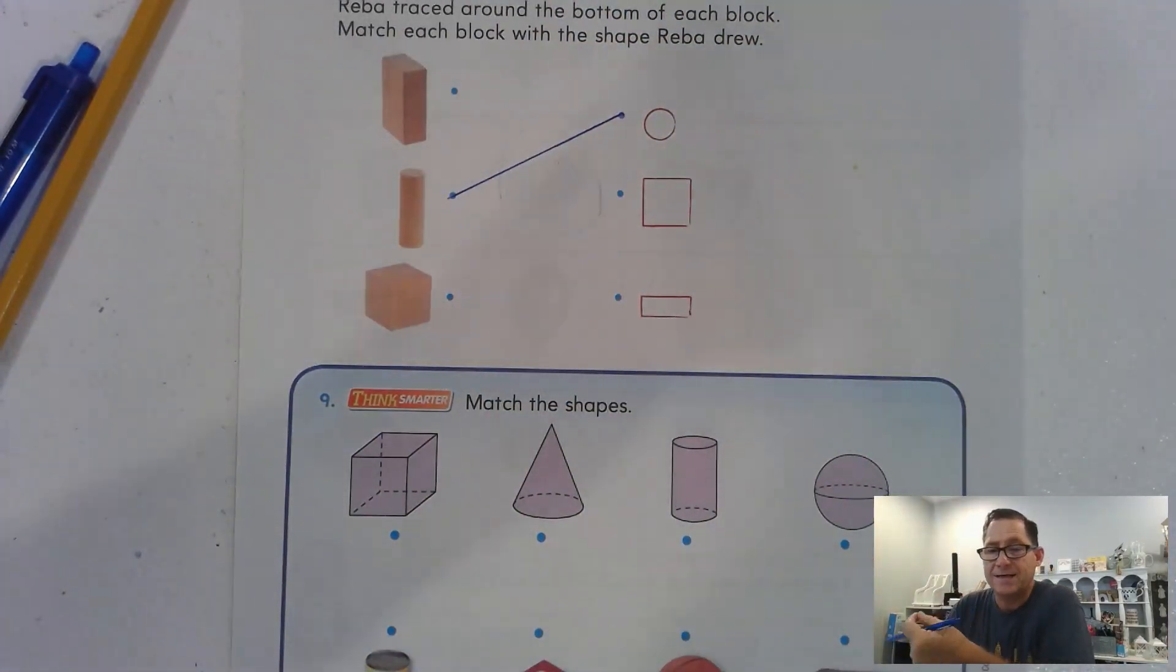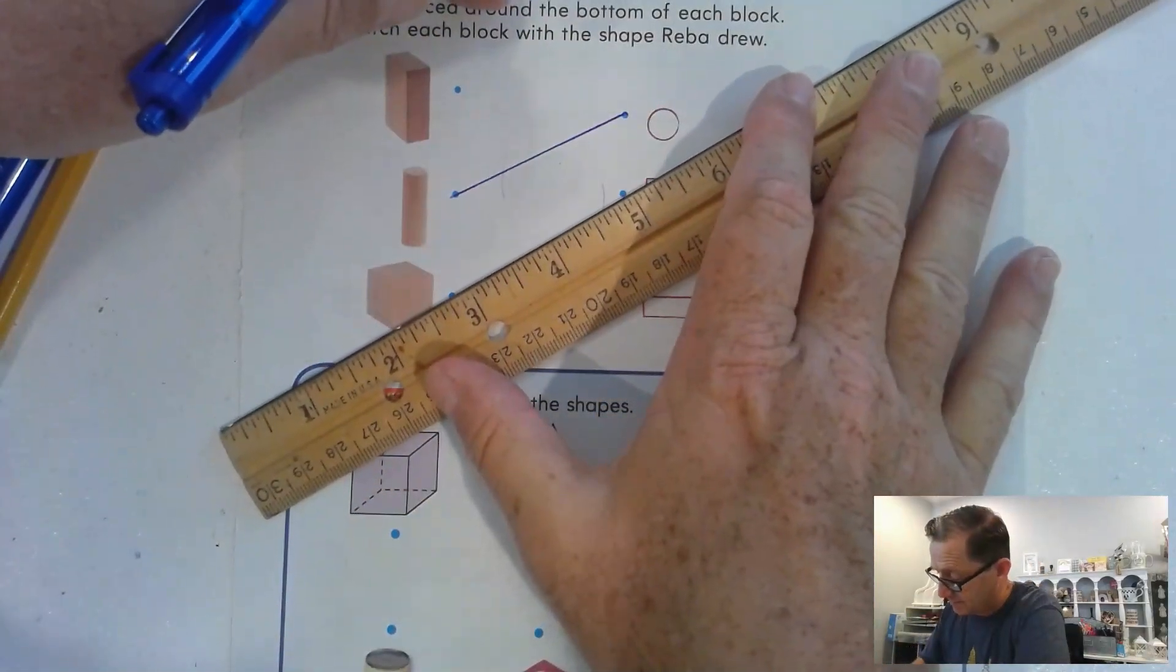All right. Now, a cube. That has to have square faces, right? So, that's this one right here.